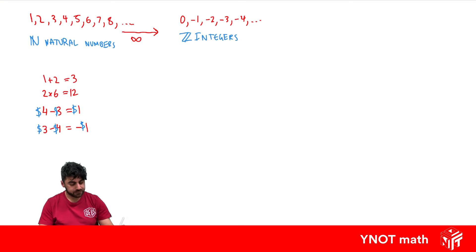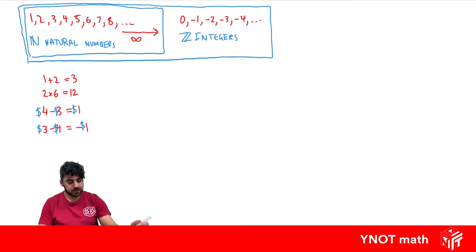So we have our natural numbers and we have our integers. And all the natural numbers, they're also integers. That's why we drew the box around all of them. So all the natural numbers, they're also integers as well.